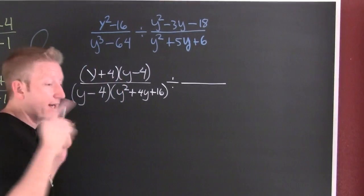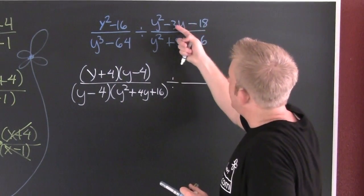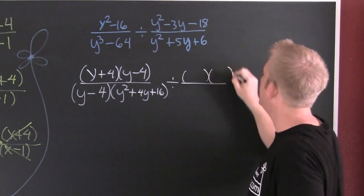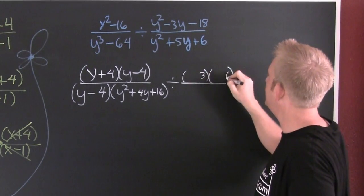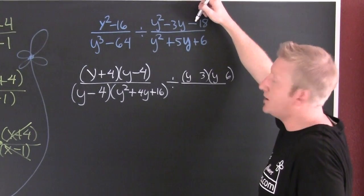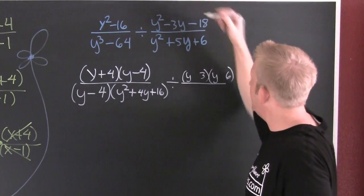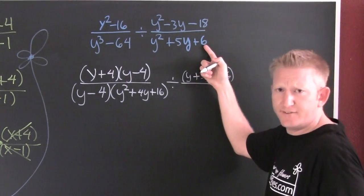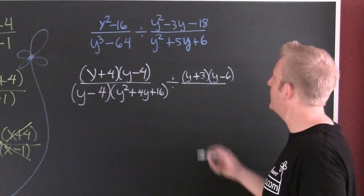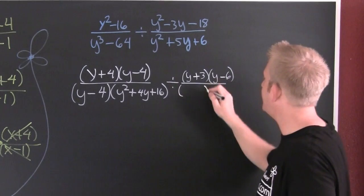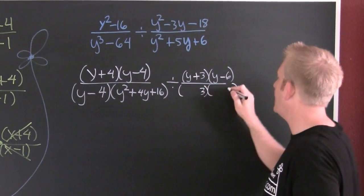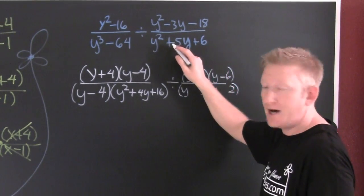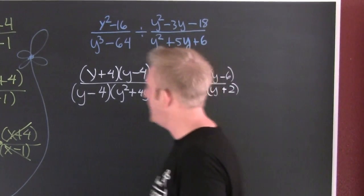Divided by — remember, we gotta factor first. Factors of 18 that subtract to be 3: three and six. The signs are different, and the big one is negative, so we get y minus 6 times y plus 3. Down there in the denominator, factors of 6 that add to be 5: three and two. The signs are the same and both positive, so y plus 3 times y plus 2.